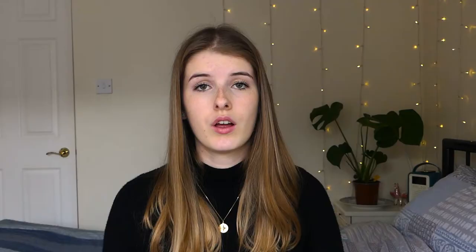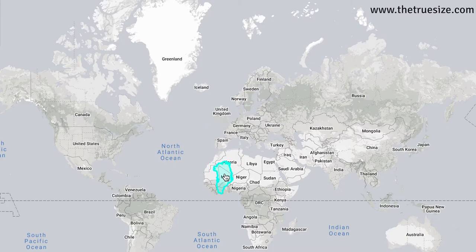This map also maintains the shapes of countries, which can be useful to get an idea of their shape, but at the expense of distorting the area of the countries. The further you get from the equator, the more distorted the area of the countries are. So for example, Greenland — which is the often quoted example — looks the same size as Africa, when Africa is 14 times bigger than Greenland.